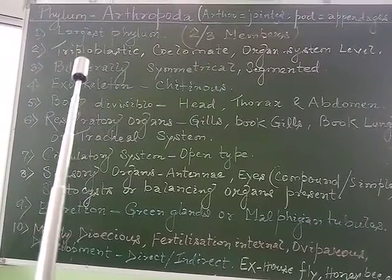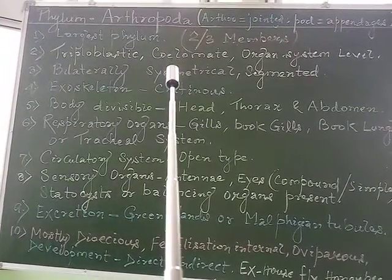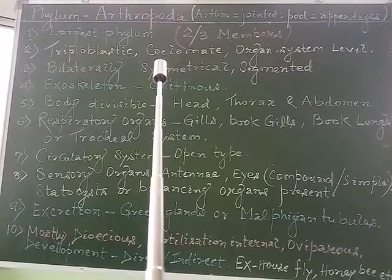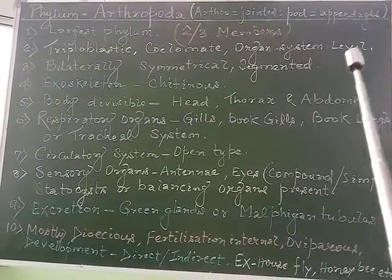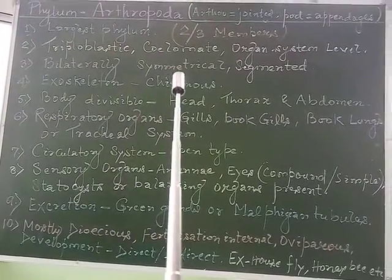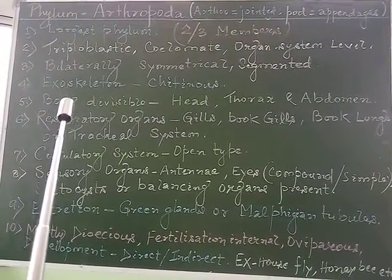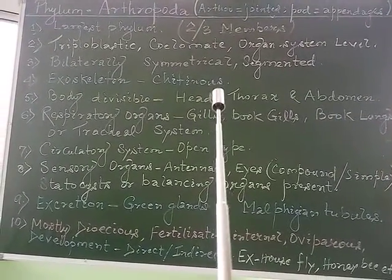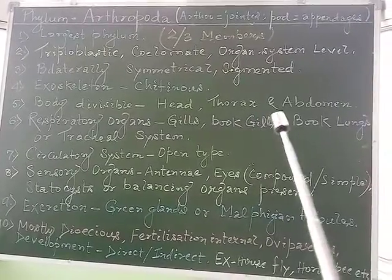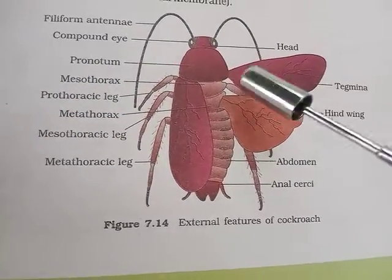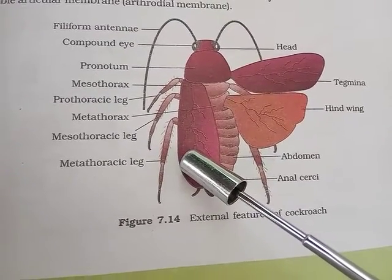Regarding their characteristic features: from Platyhelminthes, triploblastic condition has arisen, so they are also triploblastic. From Annelida onwards all are coelomate animals. They also have organ system level of body organization, are bilaterally symmetrical, and show segmentation as in Annelida. They have a chitinous exoskeleton. The body is divisible into head, thorax, and abdomen.